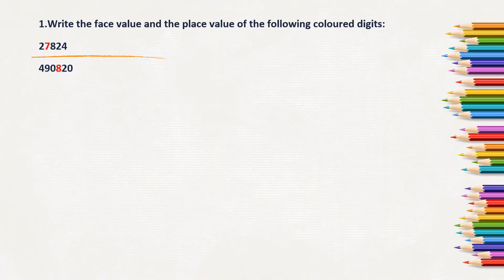First question: write the face value and place value of the following colored digits. Here, 7 is the colored digit. The face value of 7 is 7 itself, and the place value of 7 is 7,000, as it is in the thousands place.